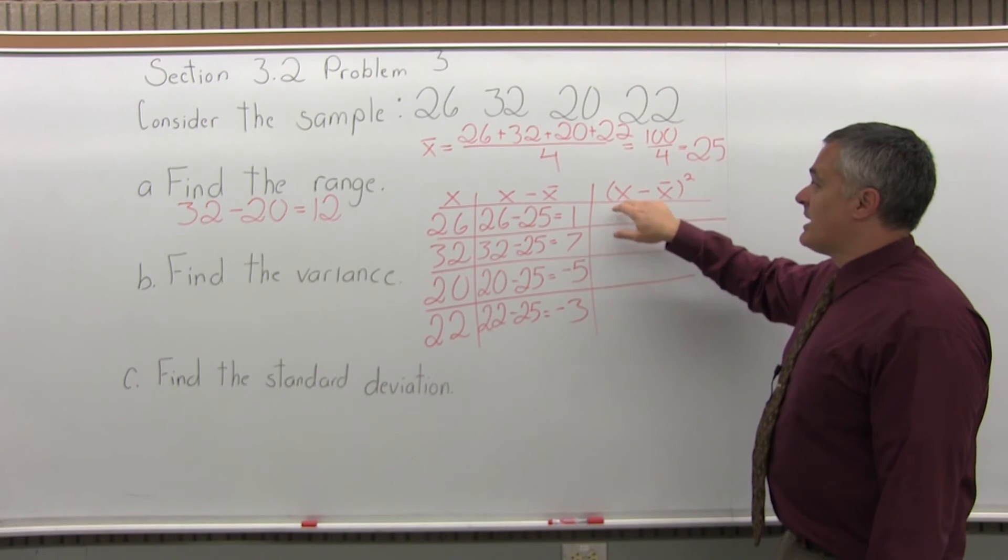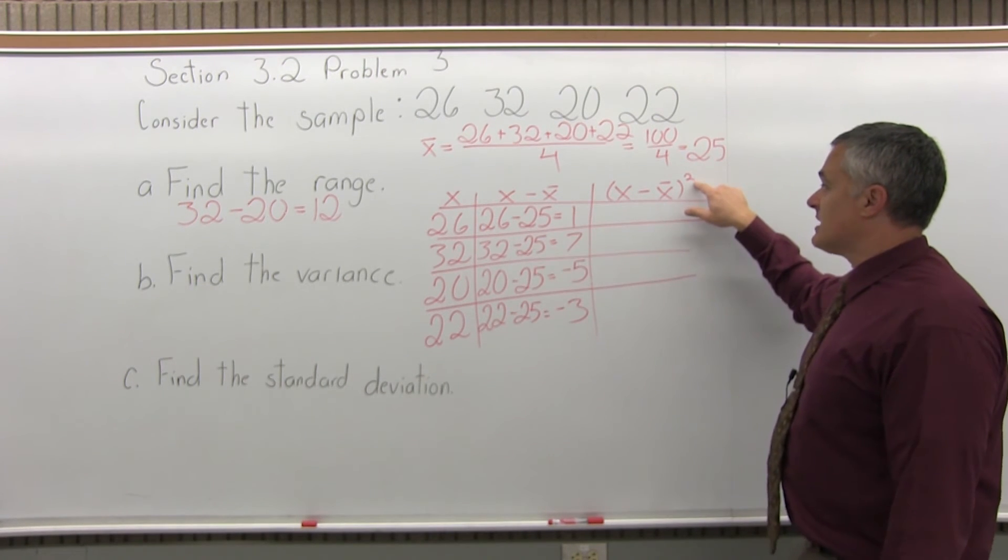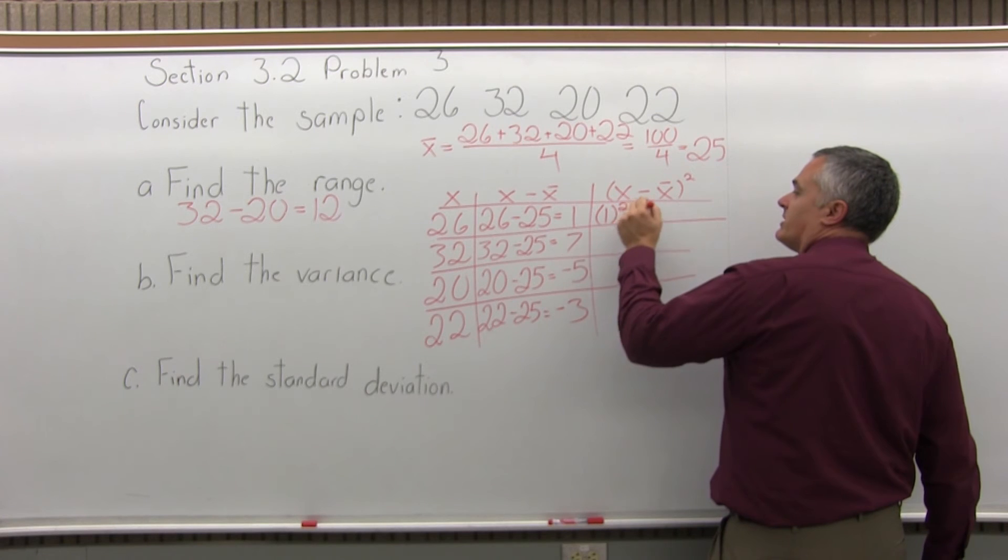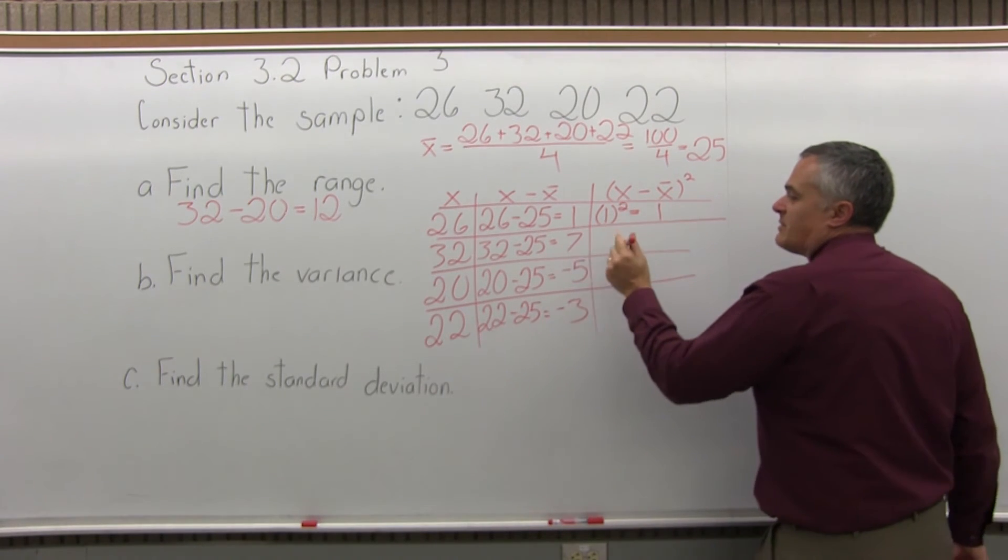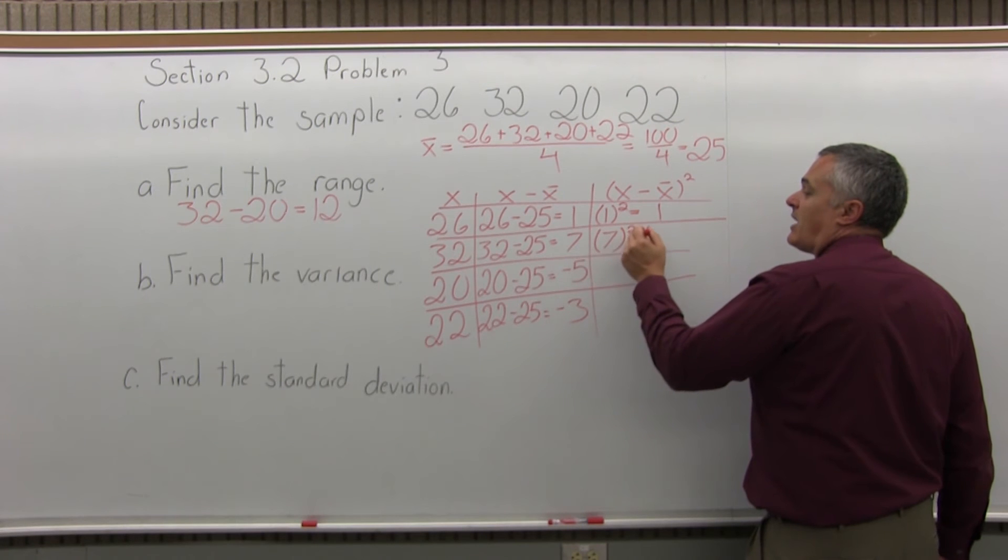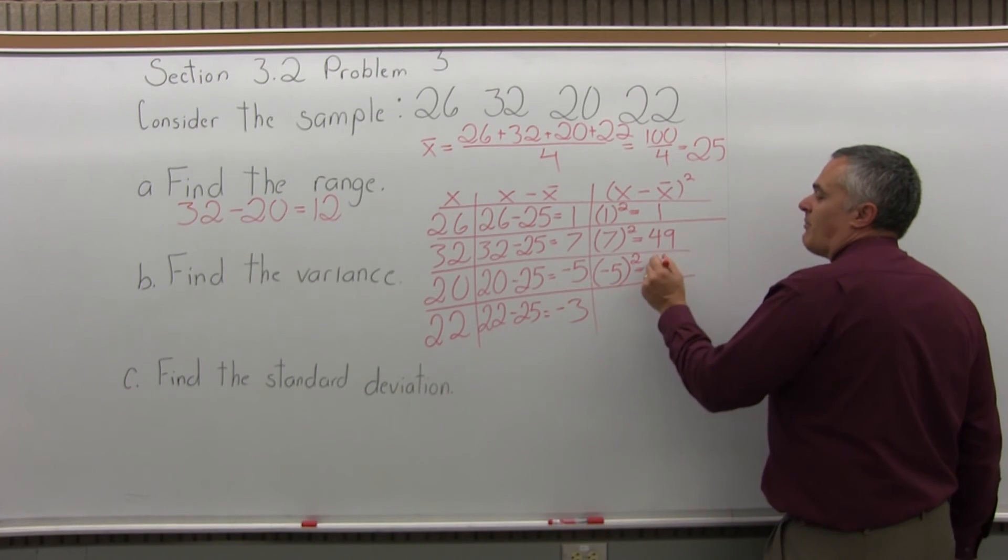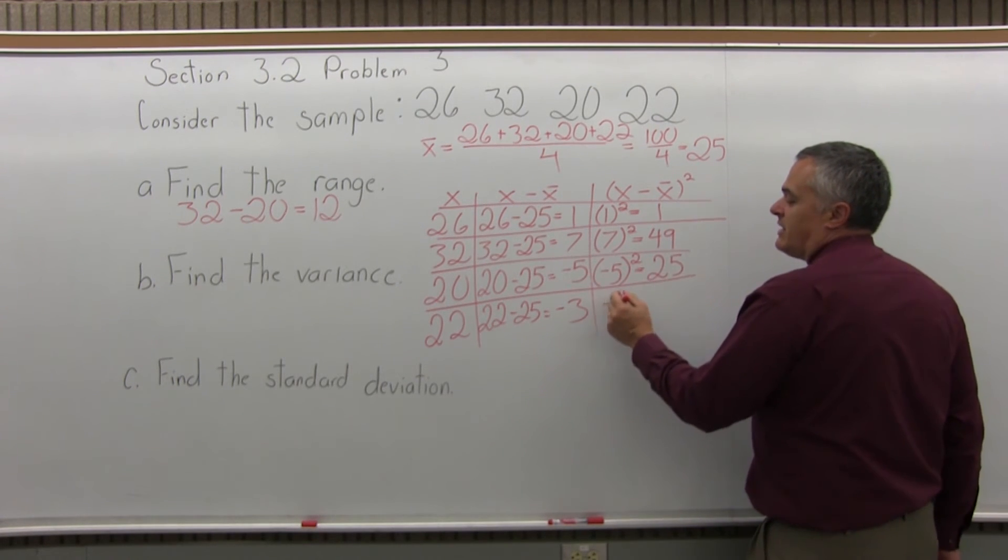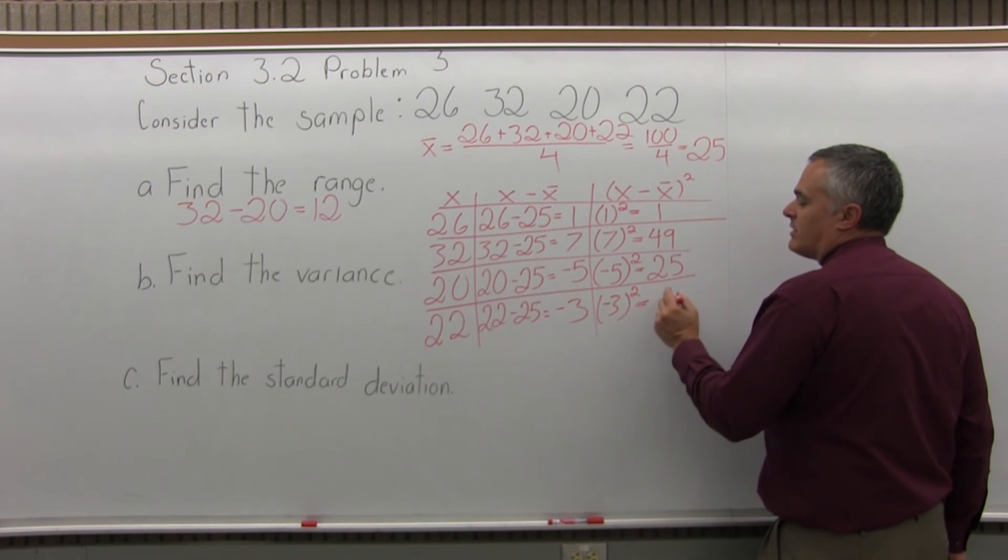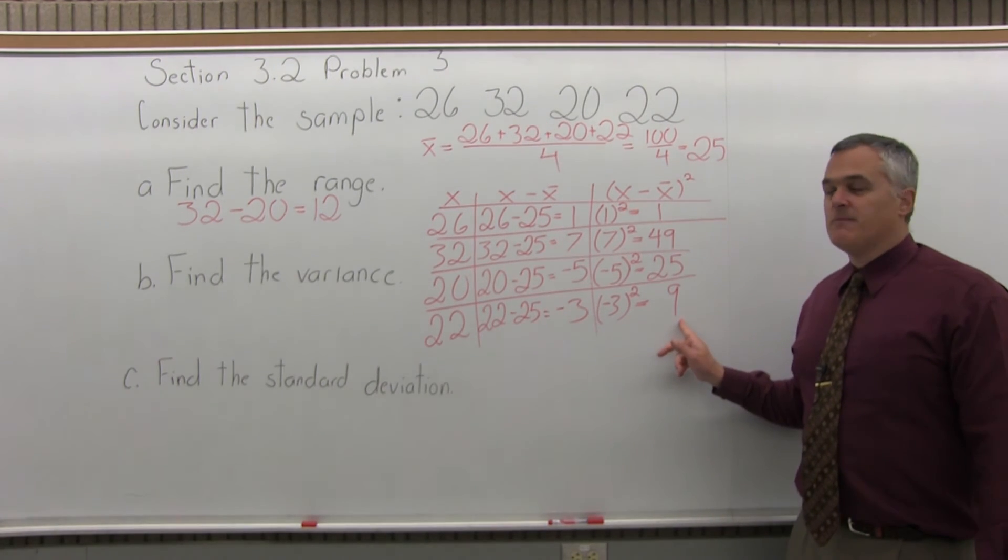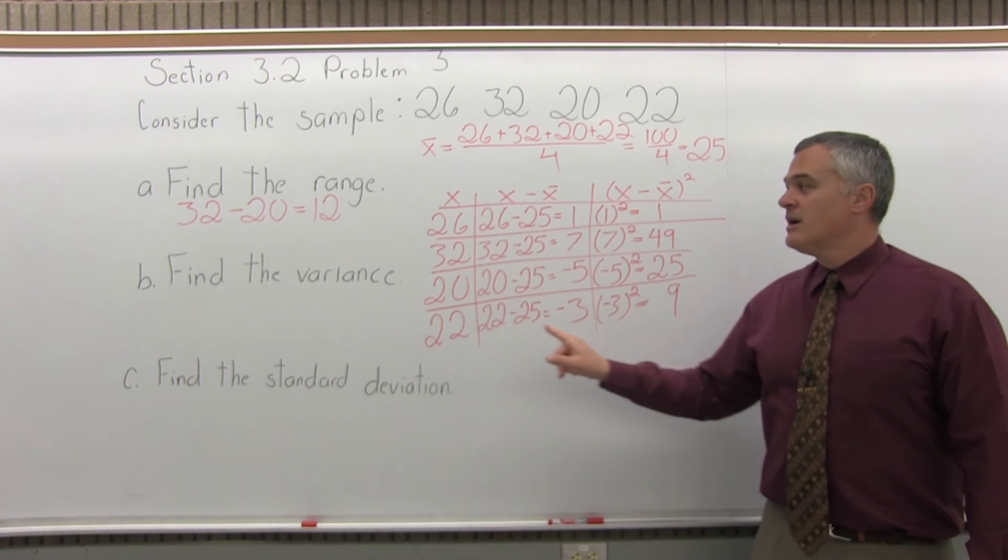So now the last column, I will take my answers for X minus X bar and raise them all to the second power. So in the top row, X minus X bar is 1, I'll do 1 second power, 1 times 1 is 1. In the next row down, X minus X bar was 7, so I'll do 7 second power, 7 times 7 is 49. In the next row down, X minus X bar was minus 5, so I'll have minus 5 second power. Minus 5 times minus 5 is positive 25. Remember, the negatives will cancel. And finally in the bottom row, X minus X bar was negative 3. So negative 3 to the second power, negative 3 times negative 3 is positive 9. So that's step 2. Step 2 is fill in the chart, and we filled in the chart.